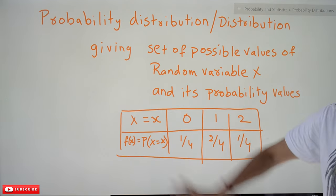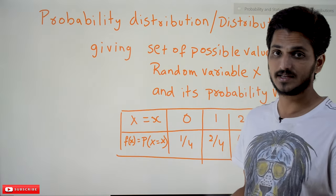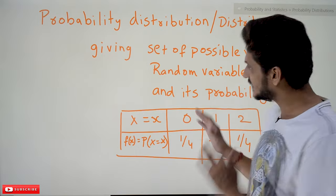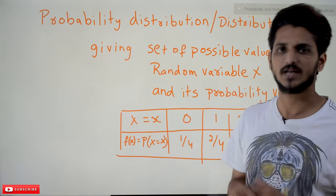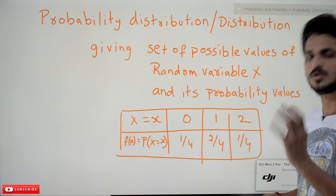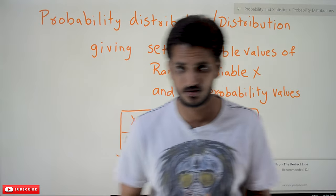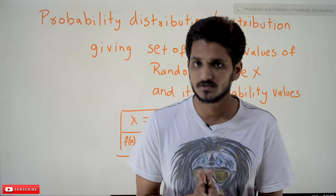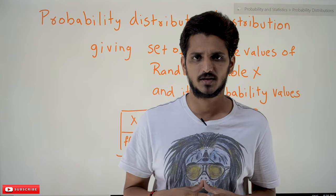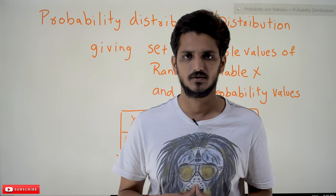In coming examples they are going to give the probability distribution, so you have to understand the terminology — that's why for the first class we discussed random variable and probability distribution. Hope you understand the concepts. If you have any questions, please post them in the comment section below. Thanks for watching — if you haven't subscribed to our channel, please subscribe and press the bell icon for the latest updates. Thank you.